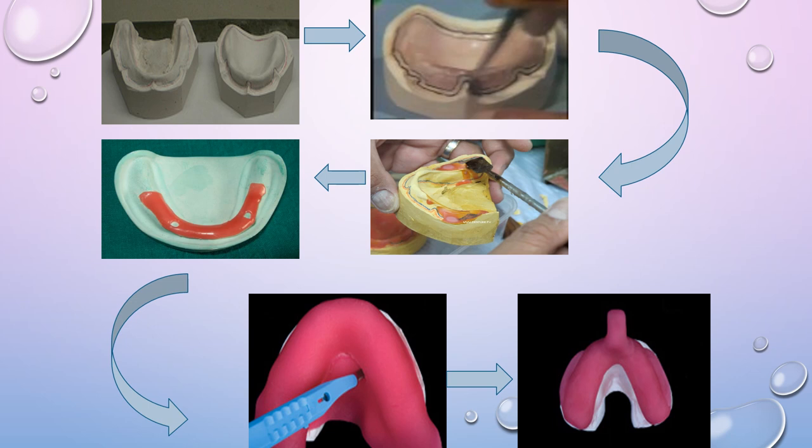In brief, the steps are: first, the primary cast; second, outline the sulcus and the custom tray extension; apply petroleum jelly or separating medium; adapt the spacer; then adapt the dough-consistency cold cure material and cut off the excess according to the second marking; finally, fabricate the handle.